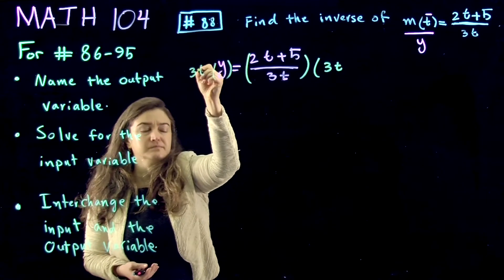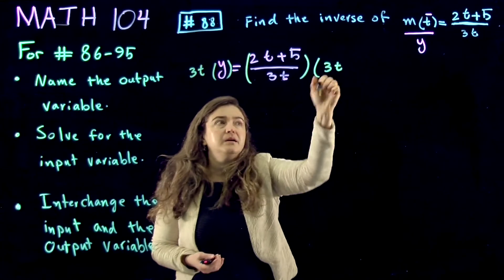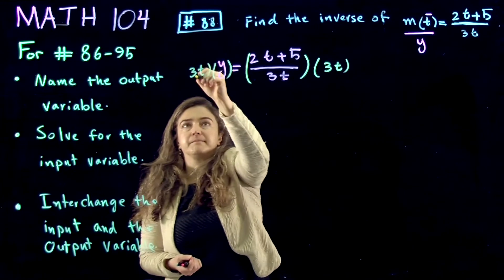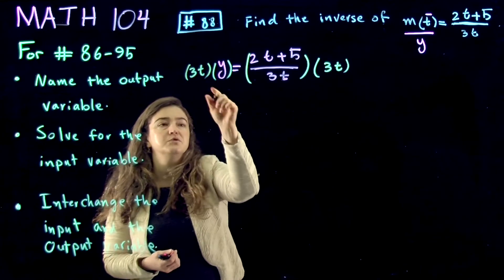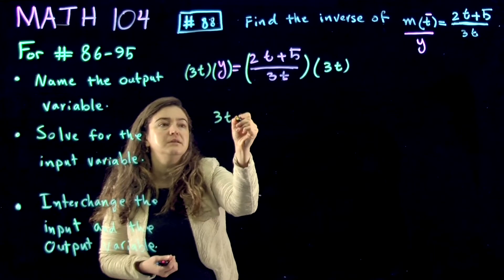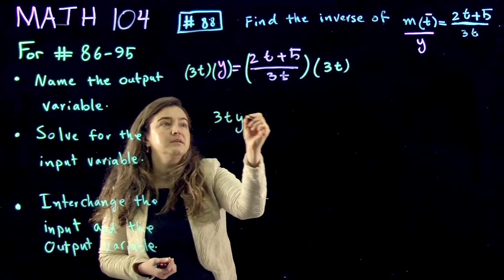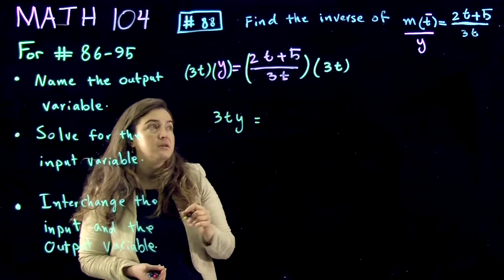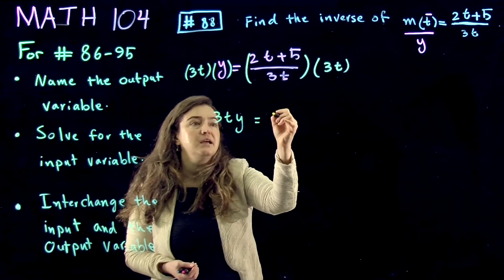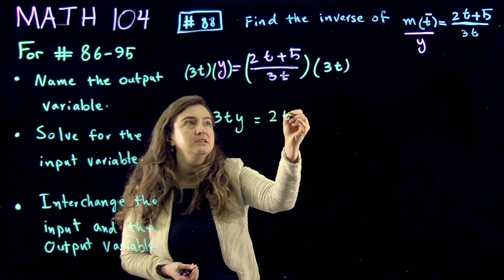And then this one is going to be 3ty, and the other side, the denominator simplifies with 3t, and you end up with 2t plus 5.